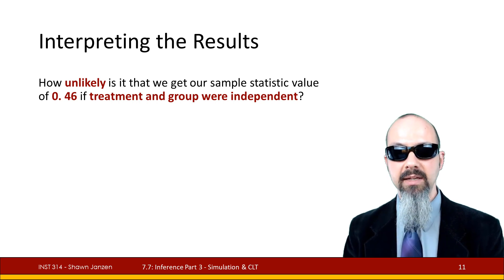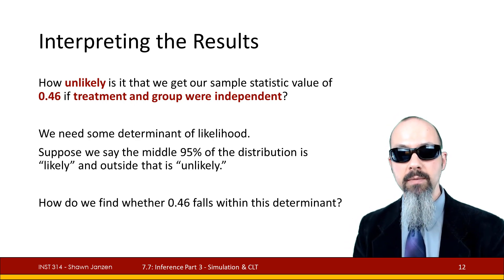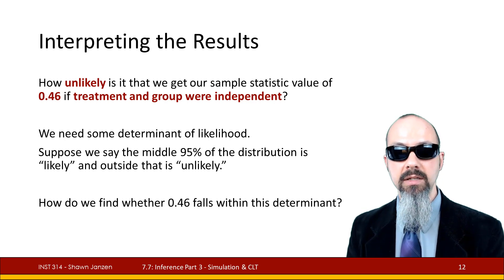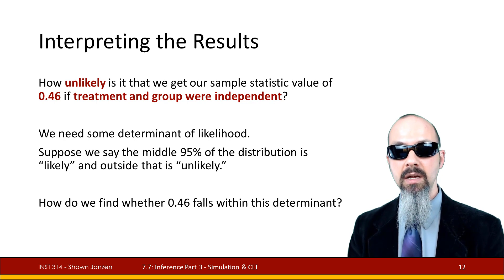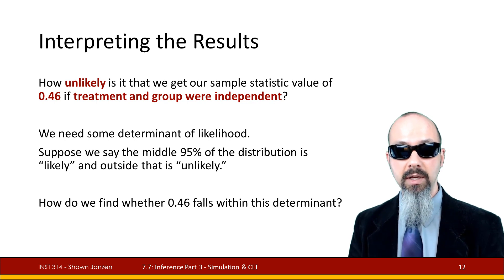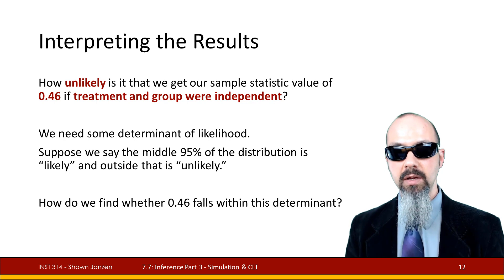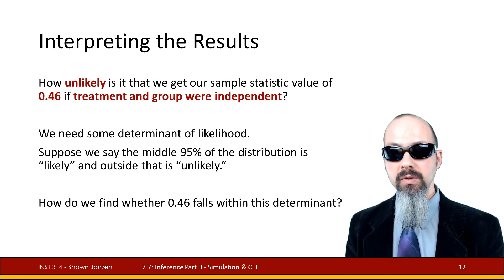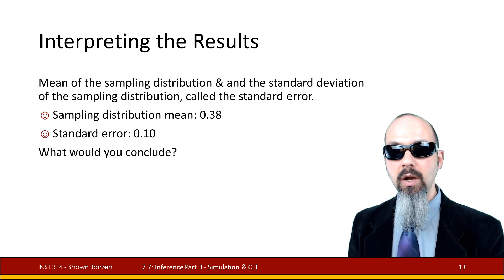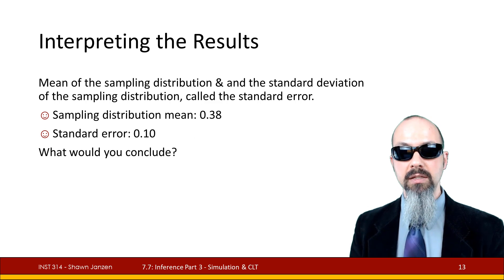Let's do this more analytically, using numbers to back it up rather than just visual inspection. How unlikely is it to get a sample statistic of 0.46 if the treatment group were independent? We need some determinant — we can say the middle 95% of the distribution is likely, and outside of that is unlikely. That's getting the idea that we have to look in the tails for extreme evidence strong enough to reject the null. That 95% refers to the confidence interval — the range of values in which we hope to find the population proportion.